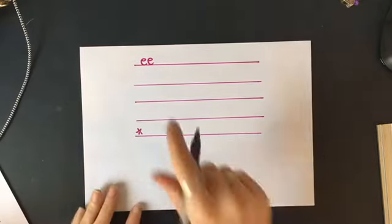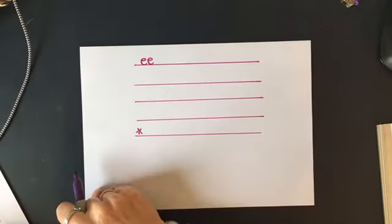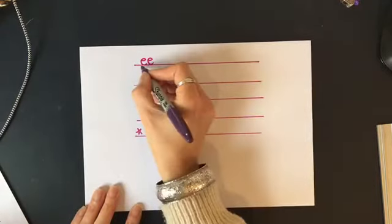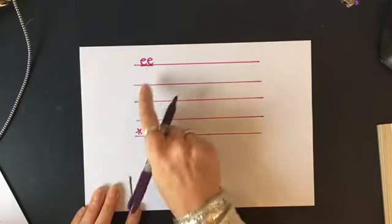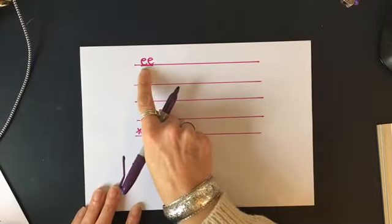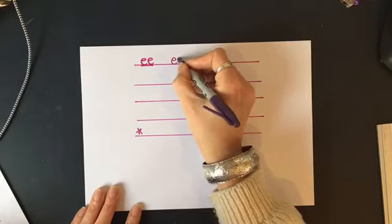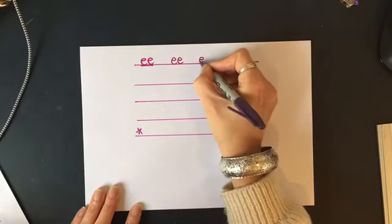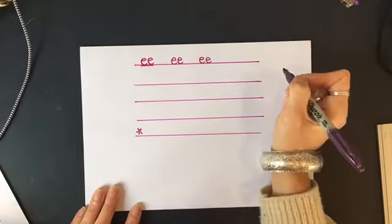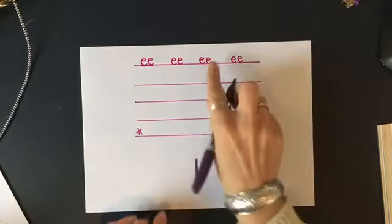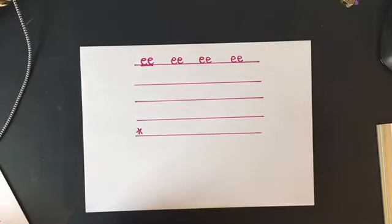Okay, so we're going to start by practicing this long E sound. When we see E and E together they are special friends, aren't they? So can you write E space, E space, E space. I think I can fit one more in there. E space. Can you do that for me now on your top line?